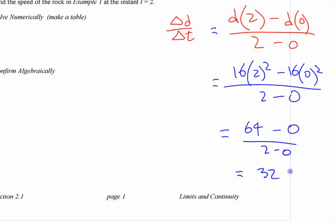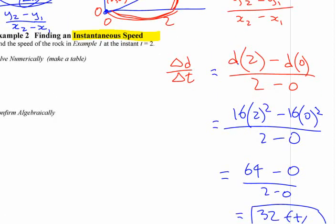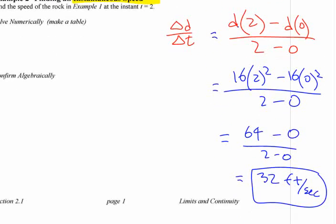32, what would the units on that be? Feet per second. 32 feet per second. That is the average speed.